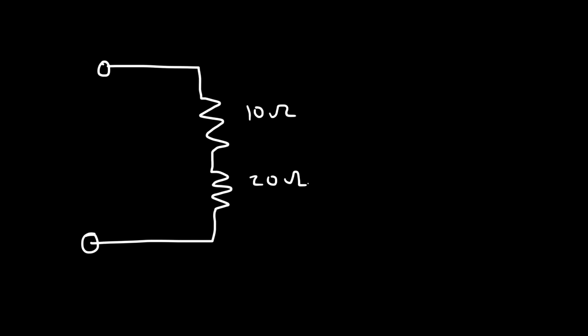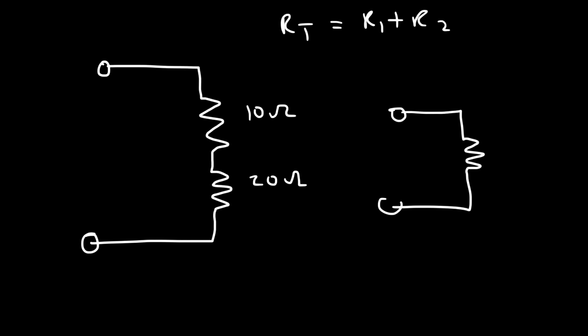In this video, we're going to focus on calculating the equivalent resistance of a circuit. So let's say if you have two resistors in series — a 10 ohm resistor and a 20 ohm resistor. What is the equivalent resistance, or the total resistance, of the circuit? In a series circuit, the total resistance is simply the sum of all the resistors. So 10 plus 20 is 30, and we can describe this as a 30 ohm resistor. These two circuits are equivalent.